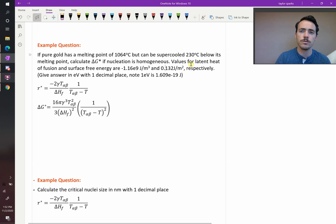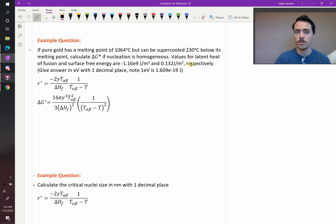And then it says values for your latent heat of fusion, that's the heat of the transition as you go from liquid to solid, and the surface free energy are negative 1.16e9 joules per meter cubed and 0.132 joules per meter squared, respectively. We're asked to give the answer in electron volts with one decimal place, remembering the conversion factor between electron volts and joules.